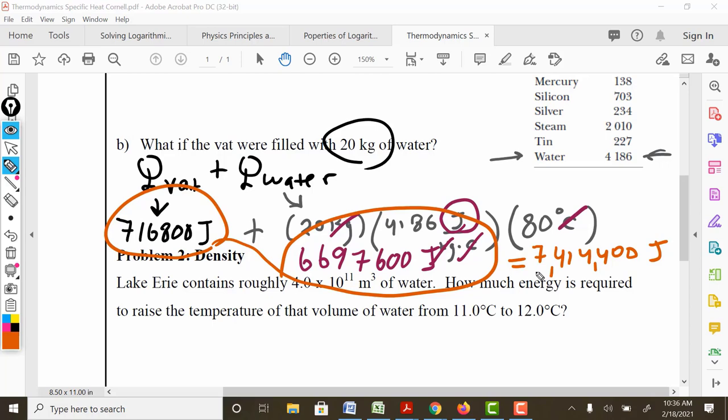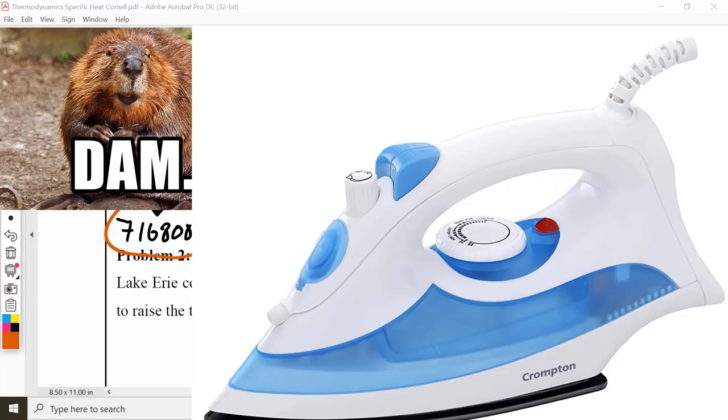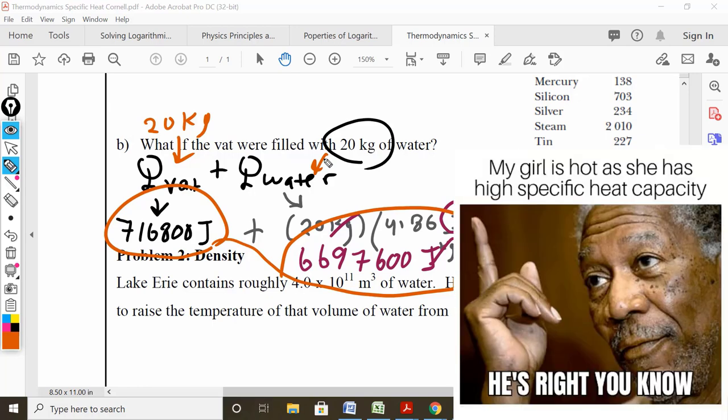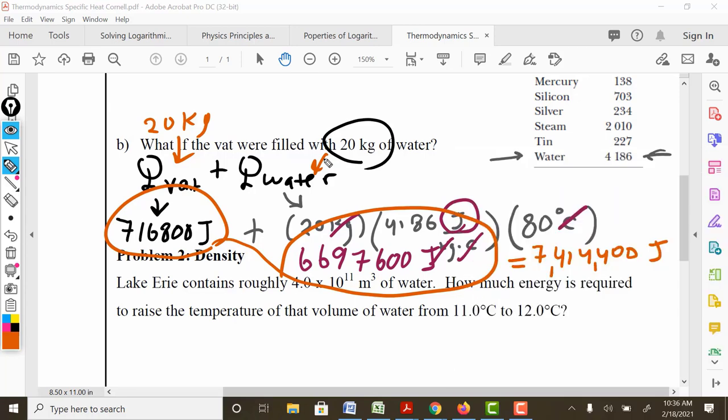Recall that in this case, the vat was made of iron. That was also 20 kilograms. It was the same mass as the water. Both of these items had the same mass. Both of these items were raised the same temperature from 10 degrees to 90 degrees. The only difference between these two objects is that one was made of iron, one was made of water. Notice a huge difference in the amount of heat necessary to heat up these different items.